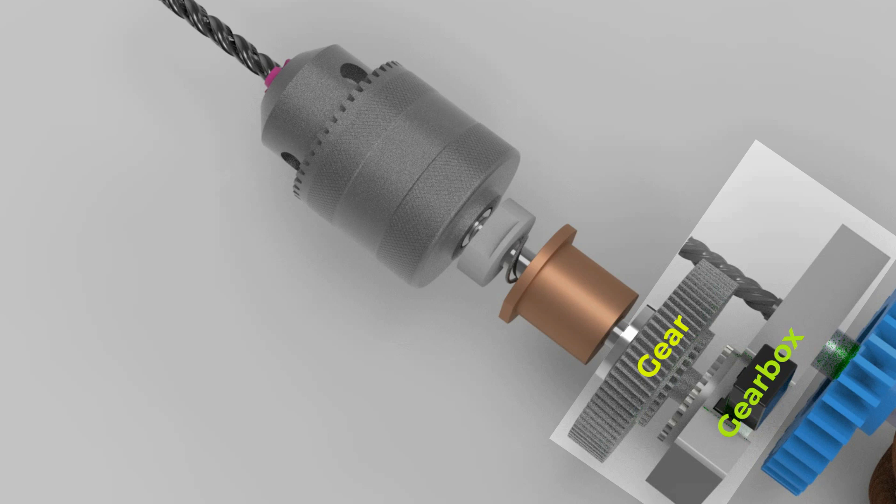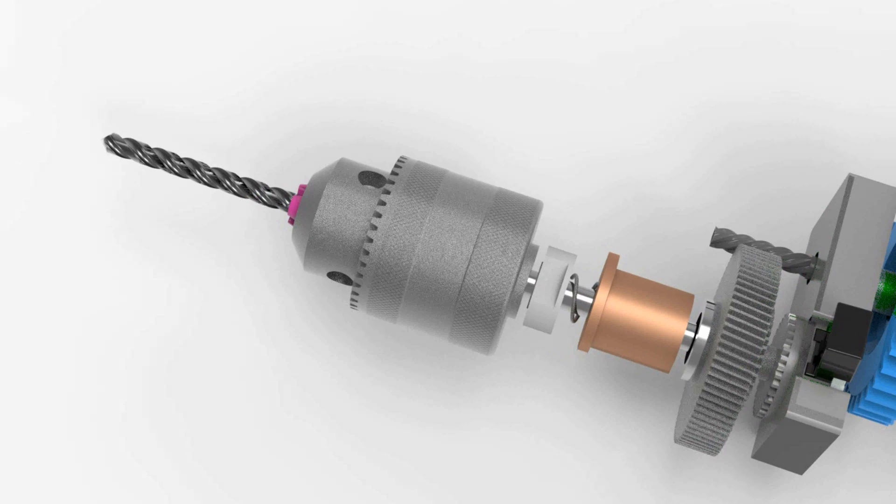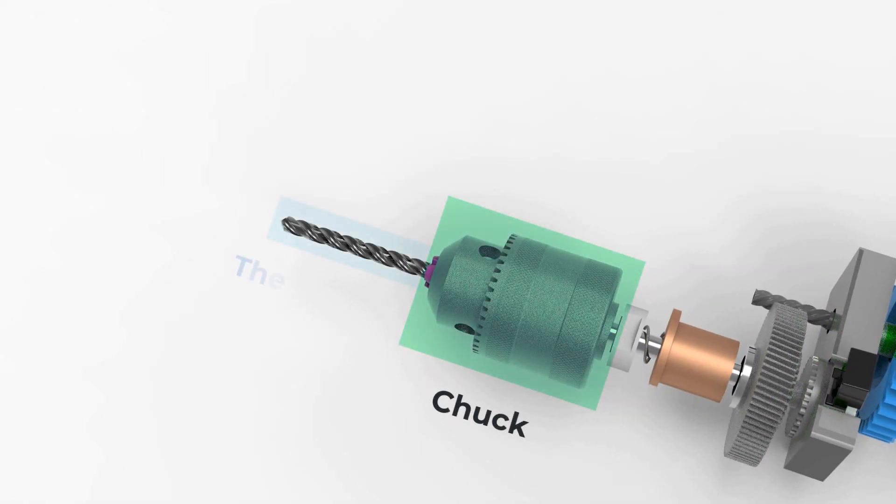The connection between the endless screw and the biggest gear allows the speed to be reduced and the torque to be increased.